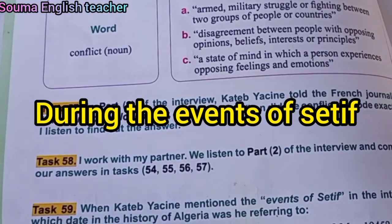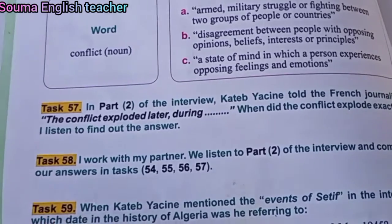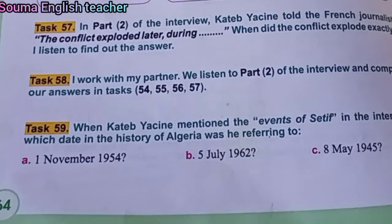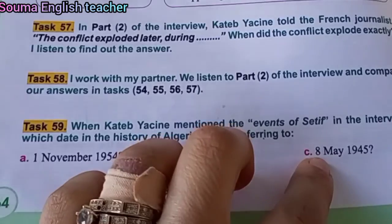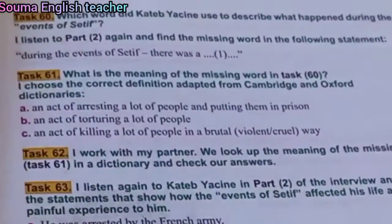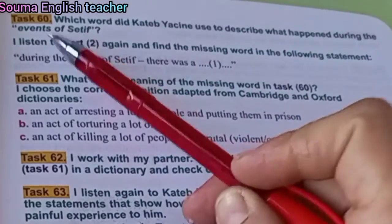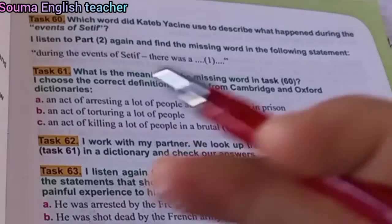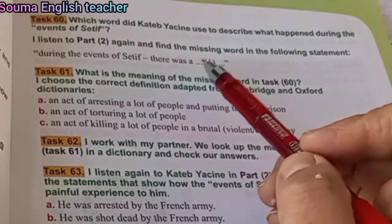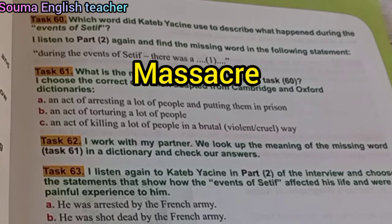He witnessed massacres and realized something was wrong. Task 59: Katib Yassine mentioned the events of Setif in the interview — which date in the history of Algeria was he referring to? The events of Setif refer to the massacres of 8 May 1945. Task 60: Which word did Katib Yassine use to describe what happened during the events of Setif? He described them as a 'massacre' — 'During the events of Setif, there was a massacre.'